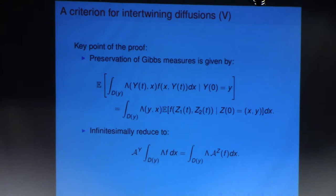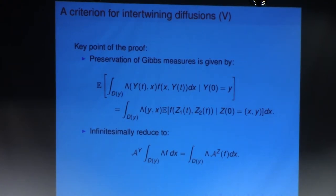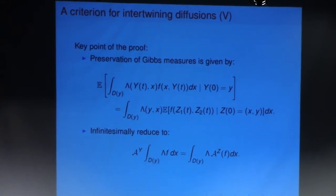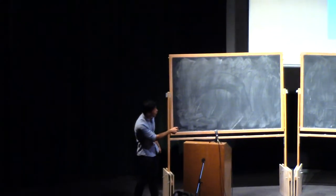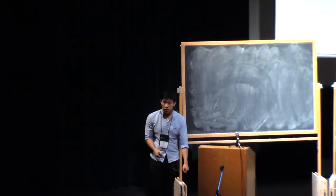So this first corresponds to just evolving the top level and finding the expectation of the function. And the second corresponds to evolving the whole process and finding the expectation of the function. And if you actually take the infinitesimal version of this identity, what you'll see is that you want to prove this somewhat easier identity.